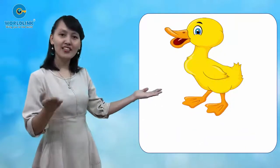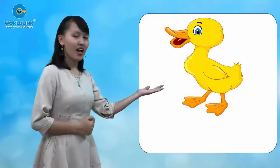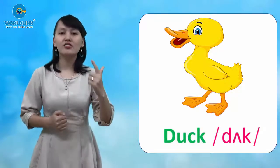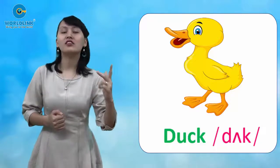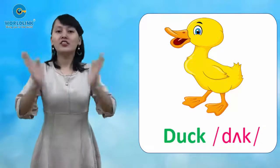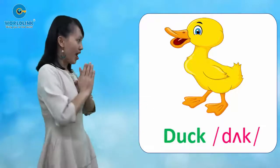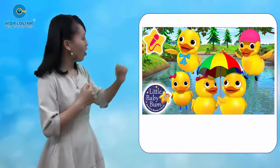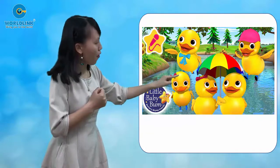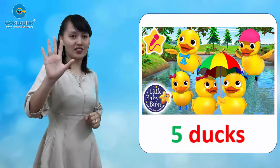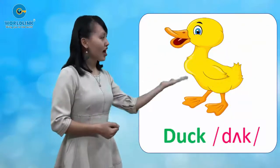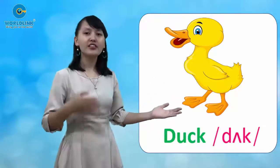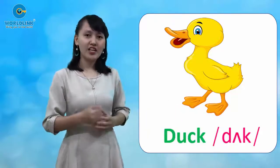Let's see. Can you guess what animal is it? And now, let's see how many dogs are there. Let's count together: one, two, three, four, five. We have five ducks! Let's practice. Duck, duck is a duck. Okay, it's your turn.